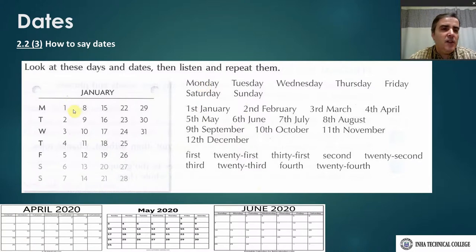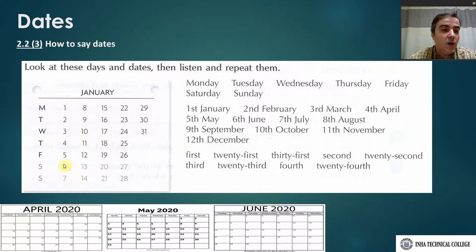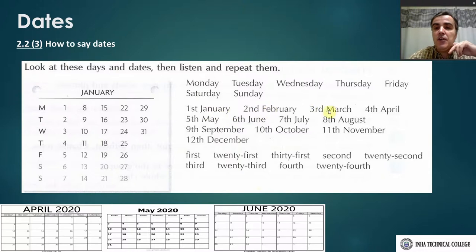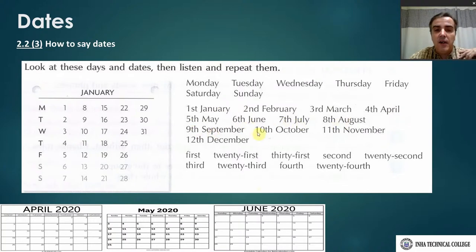For example, we can say Monday, 1st of January; Wednesday, 17th of January; Saturday, 6th of January — always good to give the day and then the date. We also have dates like: 1st of January, 2nd of February, 3rd of March, 4th of April, 5th of May, 6th of June, 7th of July, 8th of August, 9th of September, 10th of October, 11th of November, 12th of December.